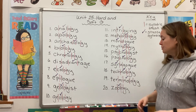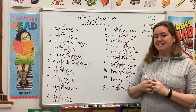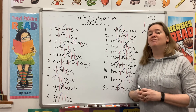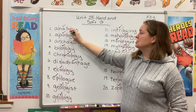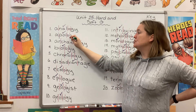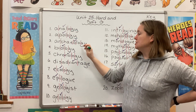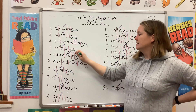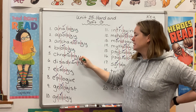Okay, choose a color. What I want you to do now is look for all of the soft G's and pay careful attention to see what letter follows that soft G. For instance, in the word analogy, G is followed by Y. In apology, it's also followed by Y. Archaeology, G-Y. Biology, G-Y. Are you noticing a pattern yet? Chronology, G-Y.